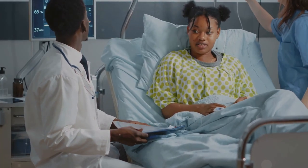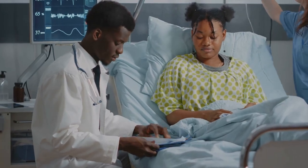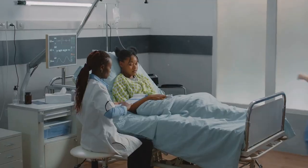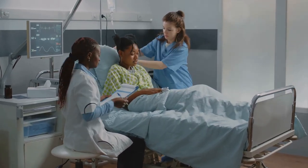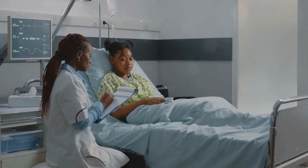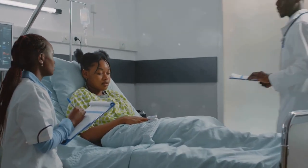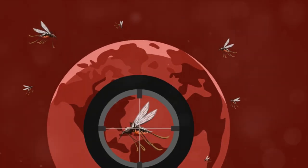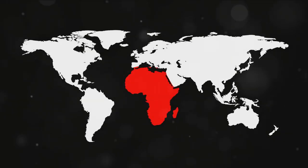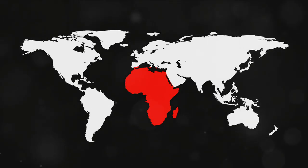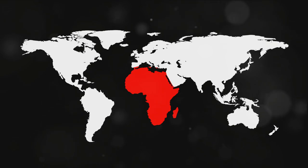Sickle cell disease has a significant impact on the African continent. It's estimated that each year around 200,000 children are born with the disease on the continent — more than half of the global total. This genetic condition distorts red blood cells into a sickle shape, causing severe pain, infections, and even life-threatening complications. The high prevalence in Africa is largely due to the malaria connection: the sickle cell trait, when inherited from just one parent, offers protection against malaria — a classic example of evolutionary trade-off where surviving malaria outweighs the risk of the full-blown disease.